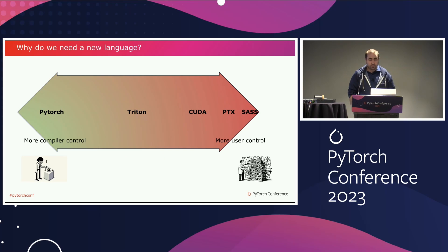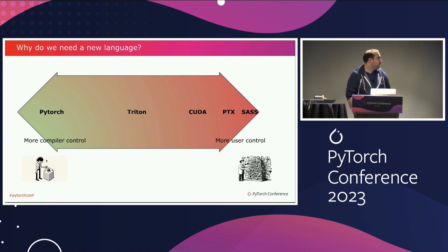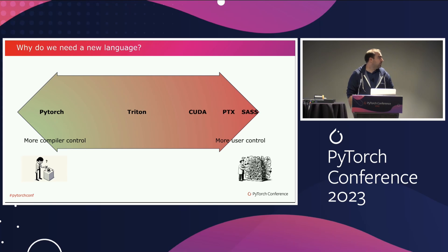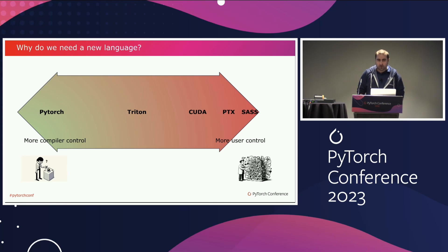So why did we need this new language? Looking at what's available to program machine learning on different types of hardware, there is PyTorch, which allows you to easily map different kinds of operations onto hardware and it's very easy to get high performance. The problem is that you have very little control.